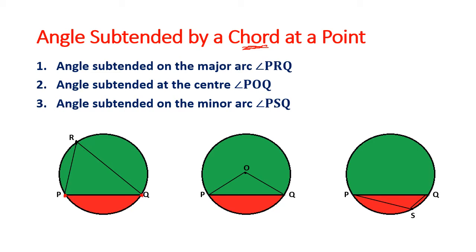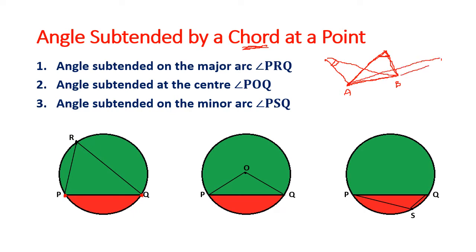Now, how do you make a triangle? Suppose you have a line segment AB. From A and from B, at any third point when you join them, it makes an angle. So the line segment AB makes an angle at any external point. If the point is here and you join it, AB makes an angle there; if the point is elsewhere, AB makes an angle there too.